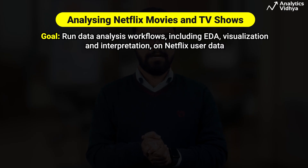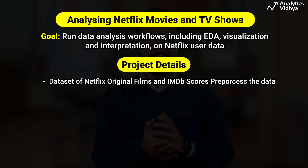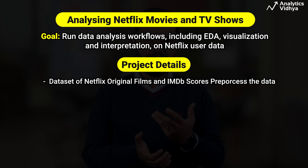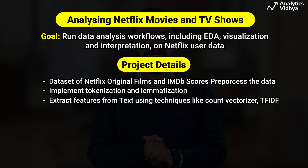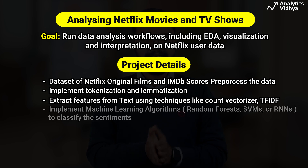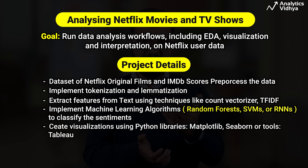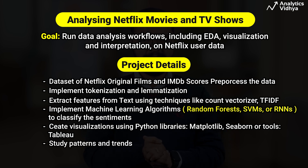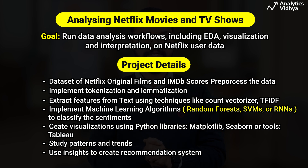This project aims to run data analysis workflows including EDA, visualization, and interpretation on Netflix user data. We use the Netflix original films and IMDB scores dataset. After pre-processing, we implement tokenization and lemmatization, then extract features from text using techniques like count vectorizer and TF-IDF, and use machine learning algorithms to classify sentiments. We create visualizations using Python libraries like Matplotlib and Seaborn, or tools like Tableau, to study patterns such as the number of movies released per year and top genres. We may also implement text analysis on titles, directors, and actors, and use the resulting insights to create a recommendation system.